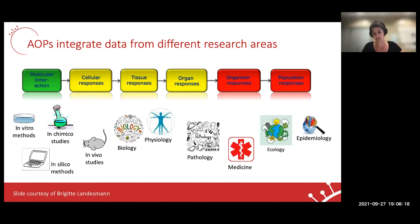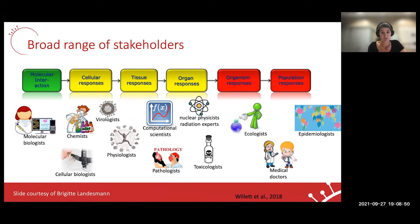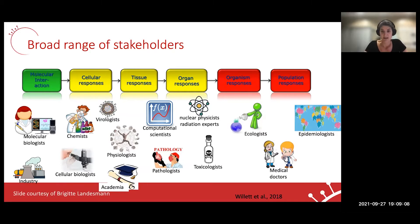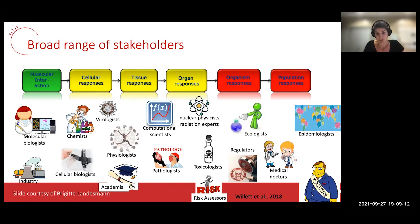AOPs integrate data from different research areas. AOP were originally developed to facilitate better use of mechanistic understanding in determining the toxicological properties of chemicals. In particular, the goal has been to deliver animal-free but reliable methodology for the risk assessment of chemicals, making greater use of in vitro, in silico, or in chemical studies and methods. Thereby, AOPs have a broad range of stakeholders: molecular biologists, chemists, cellular biologists, virologists, physiologists, computational scientists, pathologists, toxicologists, medical doctors, epidemiologists, both from industry or academia. The AOP concept is well-established in toxicology for chemical risk assessment, and they have a regulatory purpose that can also influence policymakers.